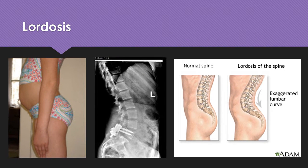Lordosis is an accentuation of the cervical or lumbar curvature beyond physiologic limits. It may be idiopathic or a secondary complication of trauma. It may occur with flexion contractures of the hip or congenital dislocated hip. In obese children, it's caused by alteration in the center of gravity by abdominal fat.